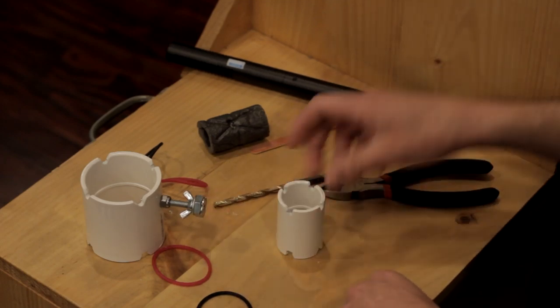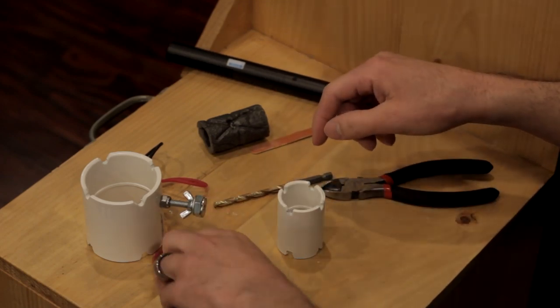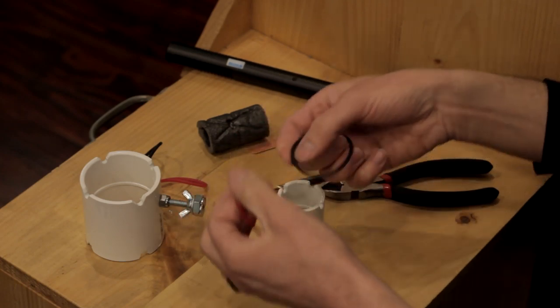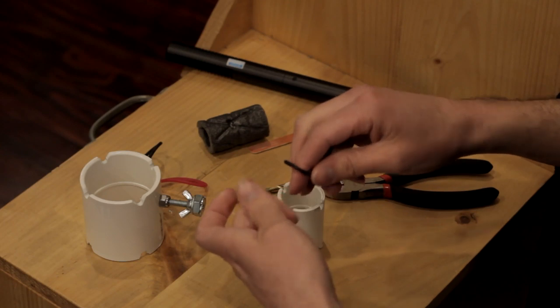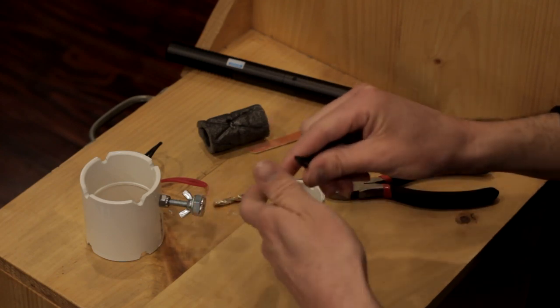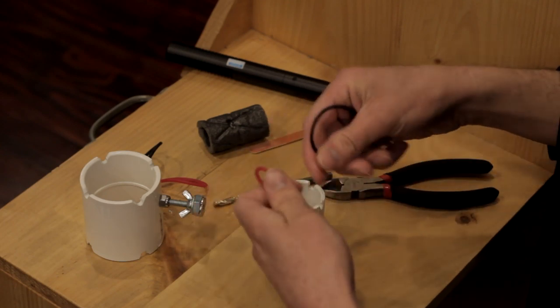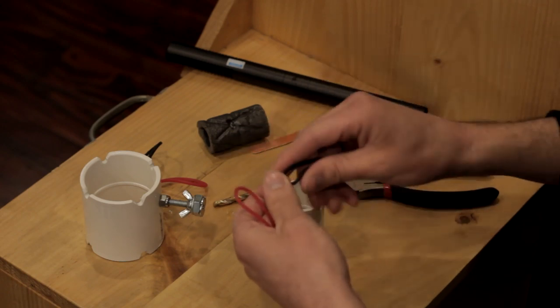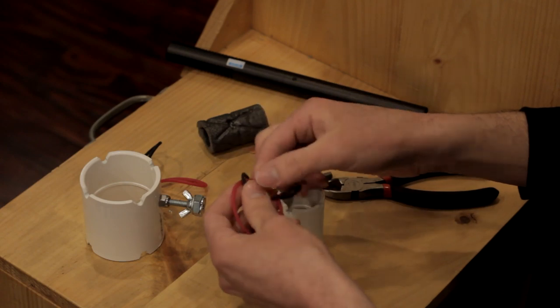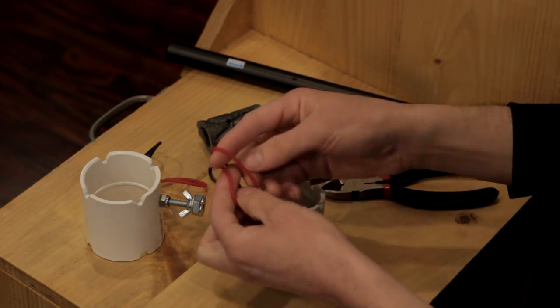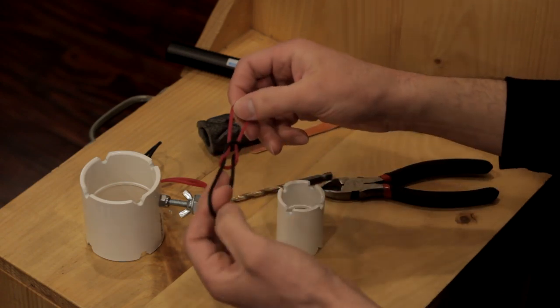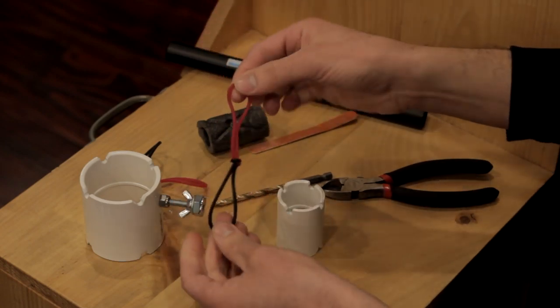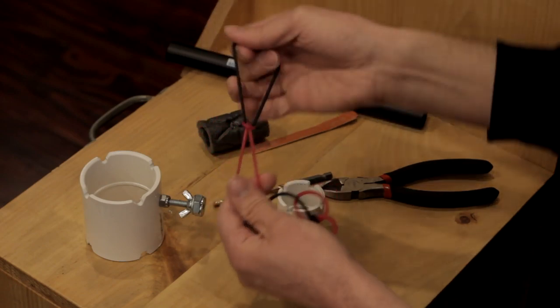Once you got that done, you're going to take your elastic bands, and I actually changed how I put these in here from the picture. This keeps them in there a lot better and it's probably a little sturdier. I took one, put it in, and looped it back through and pulled it tight. So they hold onto each other just like that. You have two bands just like that.